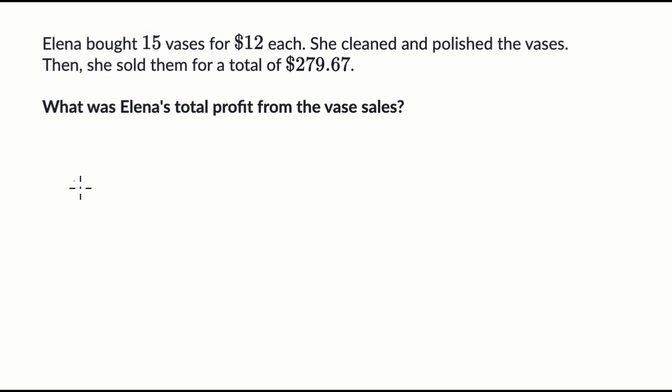Well just remember, profit is money earned minus money spent. So what's the money earned? Well that's what she sold them for. She sold them for a total of 279 dollars and 67 cents. And from that we need to subtract the money spent. So money spent, what's the money spent? Well she bought 15 vases for 12 dollars each.